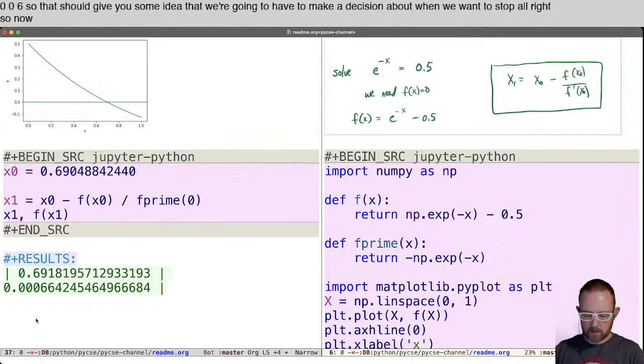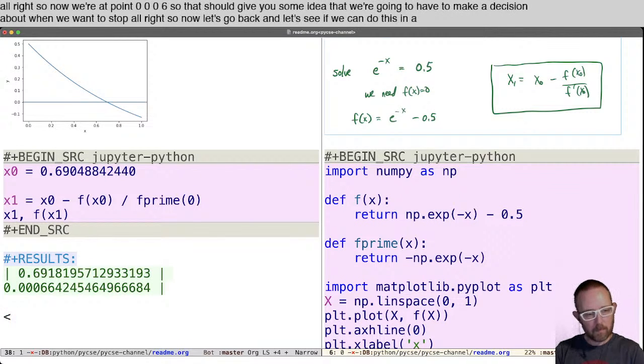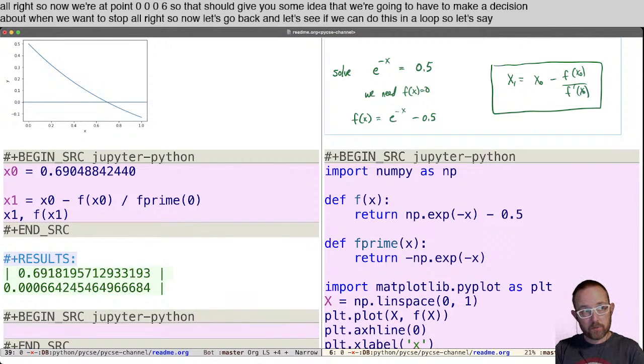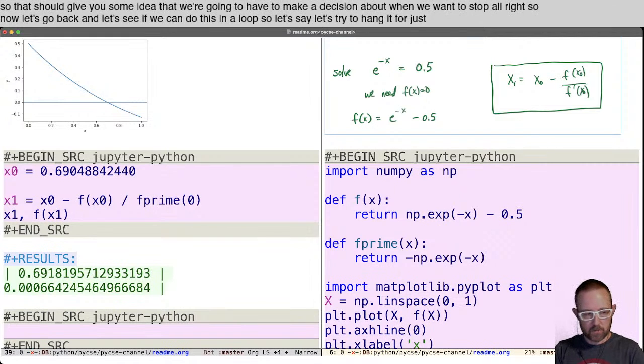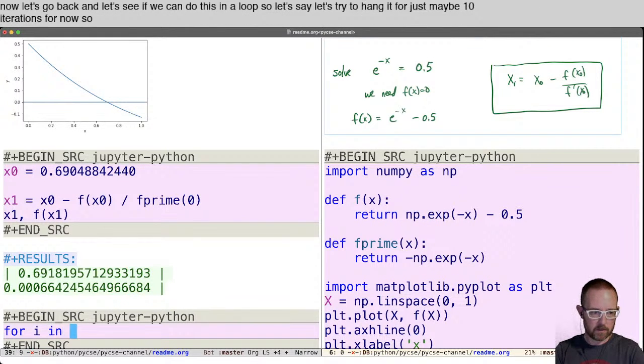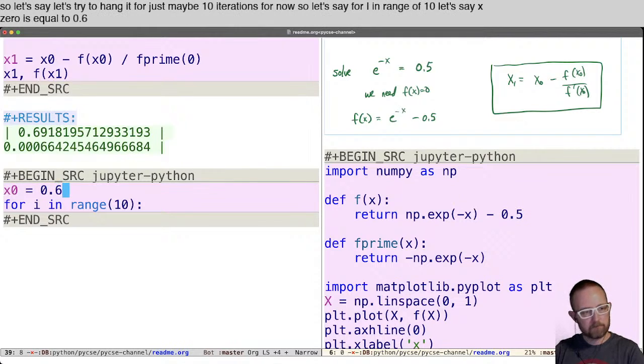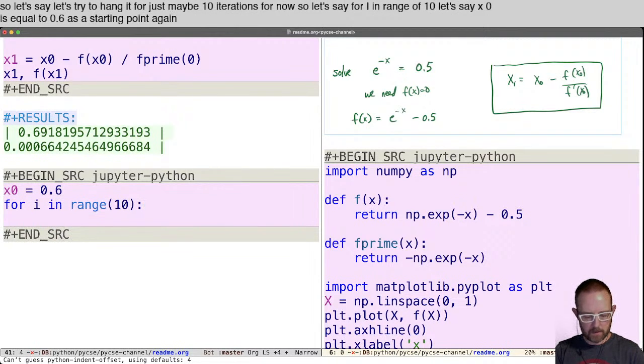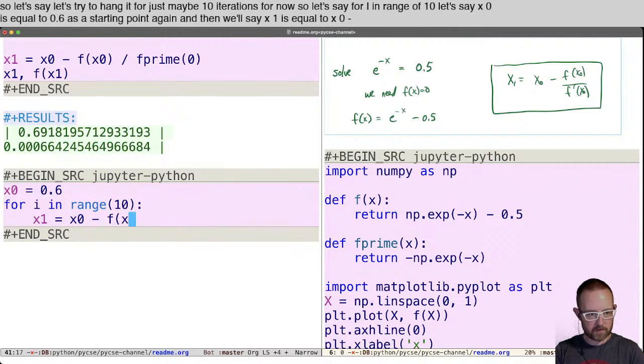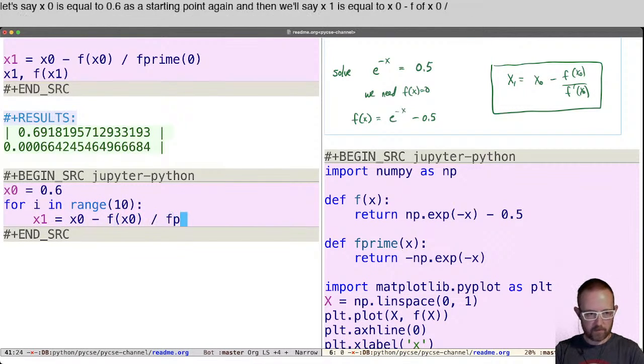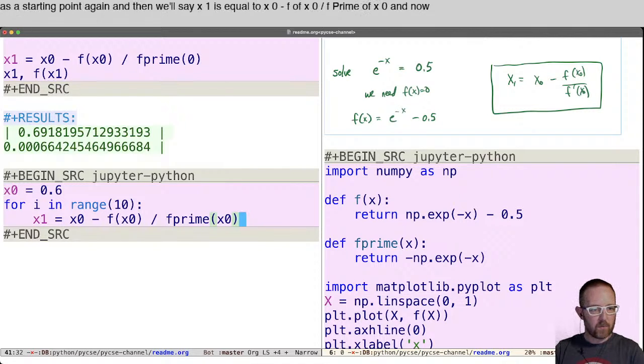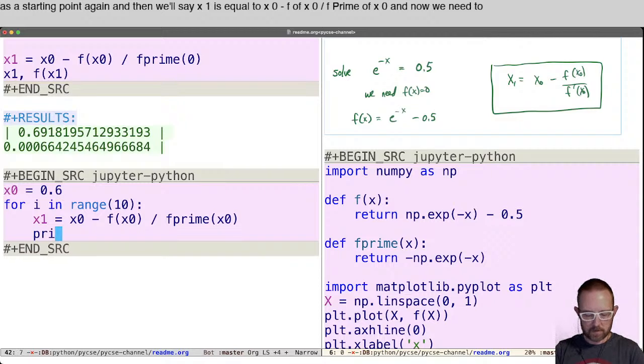All right. So now let's go back and let's see if we can do this in a loop. So let's say, let's try doing it for just maybe 10 iterations for now. So let's say for i in range of 10. Let's say x0 is equal to 0.6 as a starting point again. And then we'll say x1 is equal to x0 minus f of x0 divided by f prime of x0. And now we need to, let's print what x1 is.